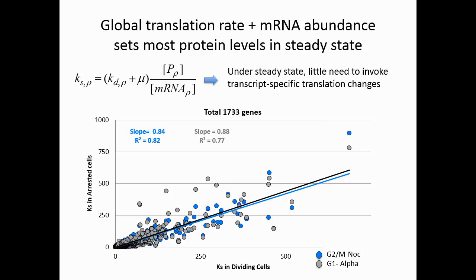Since we are also interested in the stress response, we applied this modeling upon stress to predict protein abundance after stress. Although we know the assumptions of the model might not hold after stress, I compared predictions to measured protein levels. We found that the correlation is very bad between the predicted and the measured protein abundance after stress. This may be due to the parameters changing after stress, or alternatively there is active translation regulation upon stress. I am currently testing this by running polysome-seq data to further dissect this question.